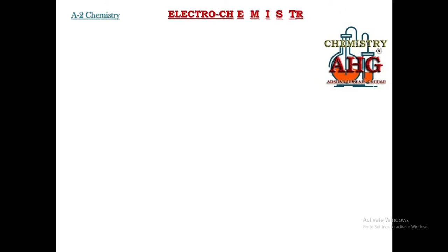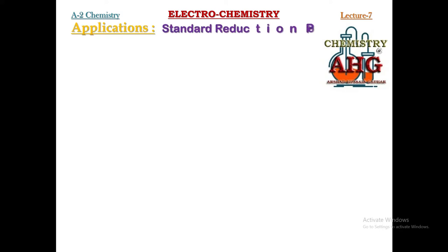Hello students. A2 Chemistry chapter is Electrochemistry, Lecture number 7. In this lecture we are going to study the last application of standard reduction potential — how to write down a cell diagram, or how to write down cell notation.